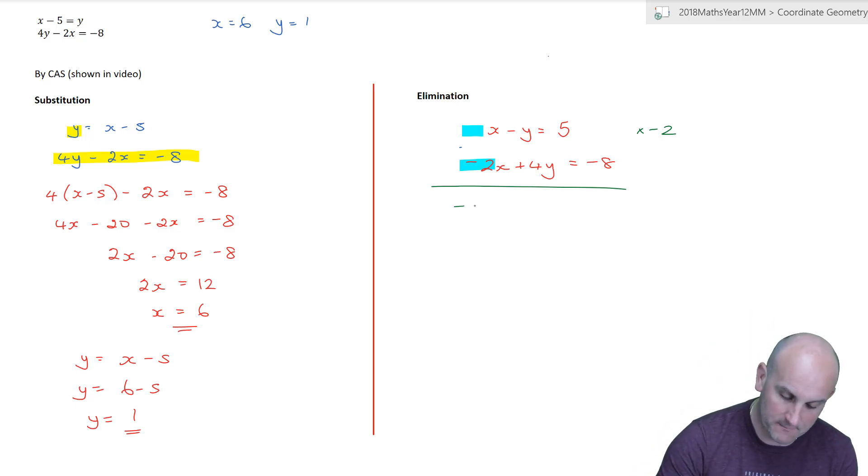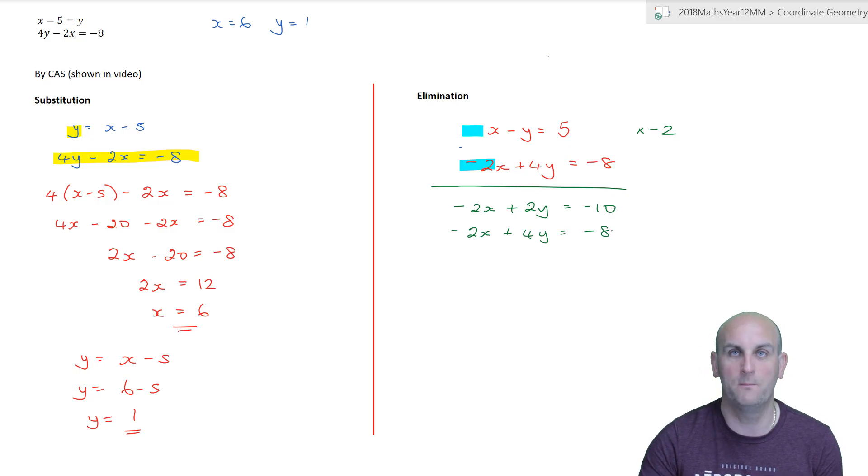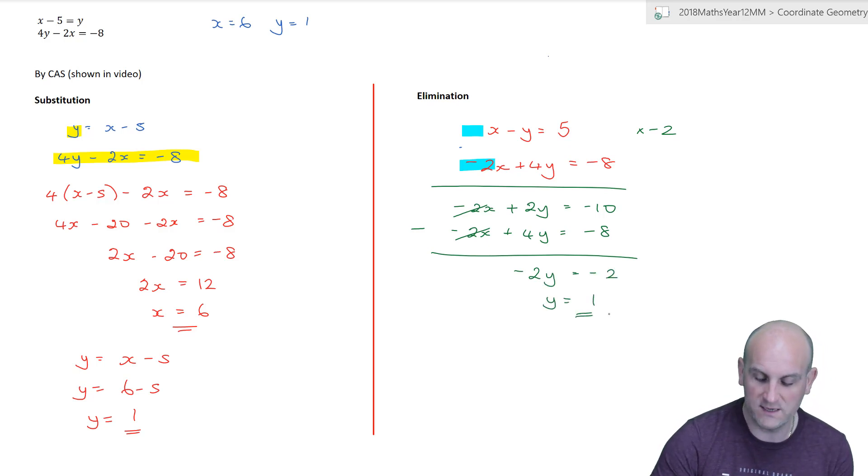I'm going to multiply that top equation by negative 2. So, we get minus 2x plus 2y is equal to negative 10. And again, don't forget to multiply every single term. Copying down the next equation, minus 2x plus 4y is negative 8. And now, I need to find a way to get rid of those minus 2x's. Well, minus 2x minus minus 2x would add those two together. In which case, if I was to subtract those together, these would therefore eliminate. That's why it's called elimination. So, I'm going to subtract that top equation from the bottom equation. So, 2y minus 4y gives me minus 2y, and minus 10 minus minus 8 gives me minus 2. And y works out to be 1.